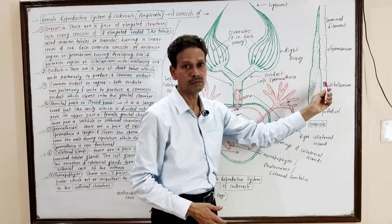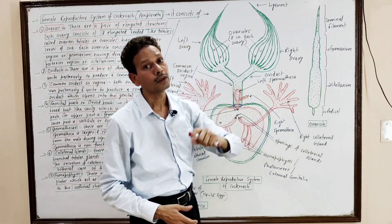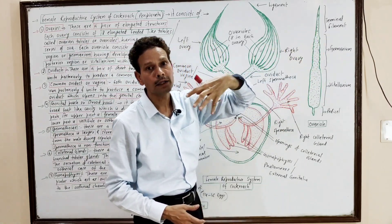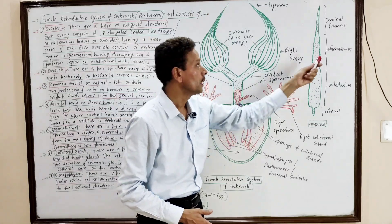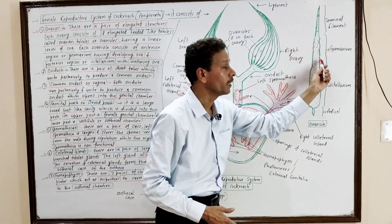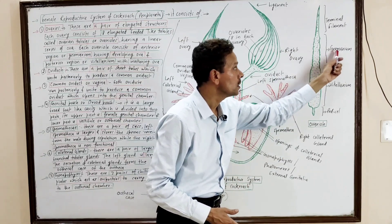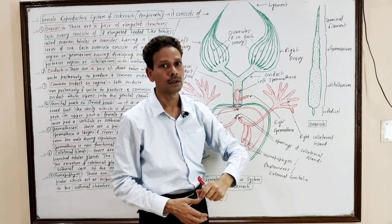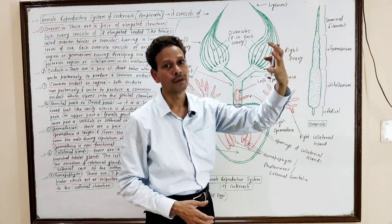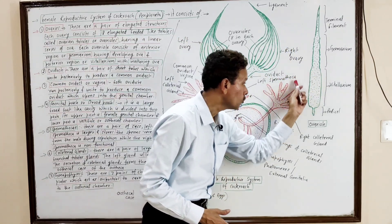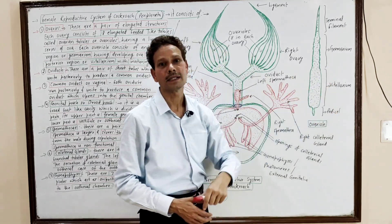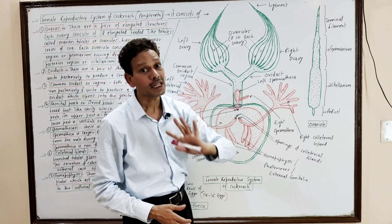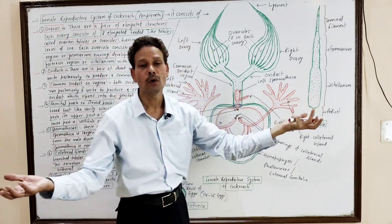Each ovariole has 3 parts. First, the terminal filamentous tapering part. Then the beaded-appearance part, which is the germarium, and this germarium has a series of developing ova. And in this posterior wider part, it is the vitellarium, in which mature ova are present.